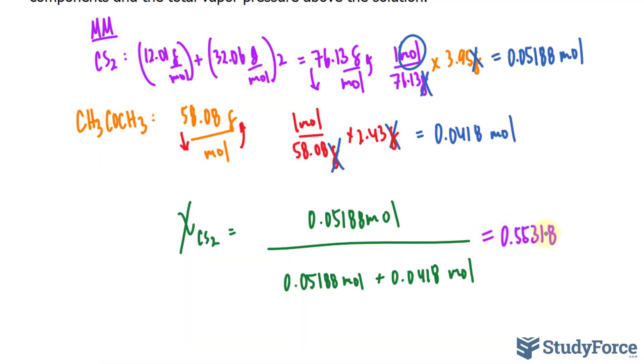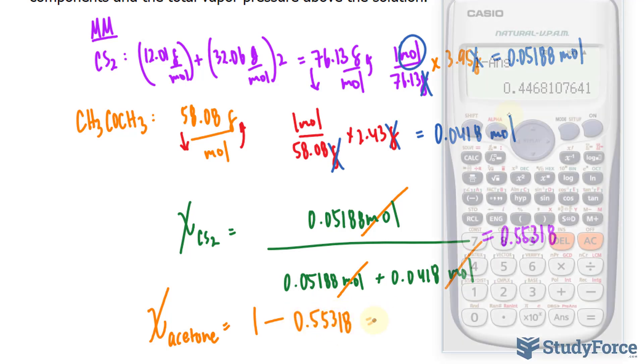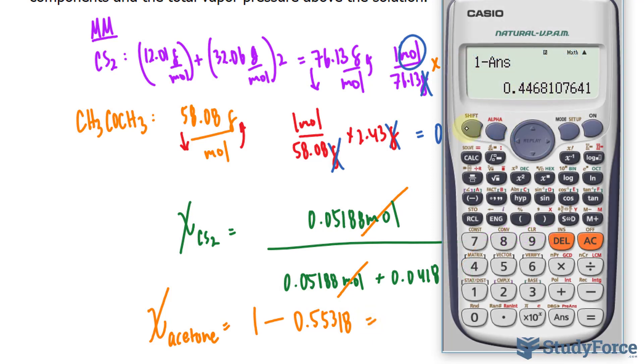And it is a unitless number because the mole units will cancel out. To get the mole fraction of acetone, we can do this process all over again, but rather than that, we can subtract. So I'll write down the mole fraction of acetone is equal to 1 minus what we found, 0.55318, giving us 0.4468.